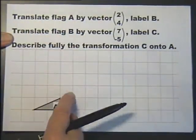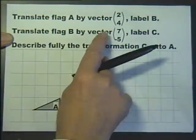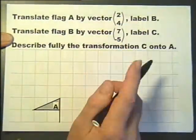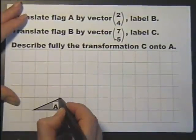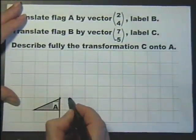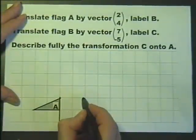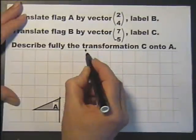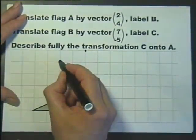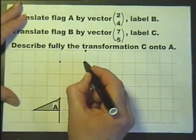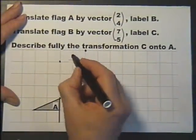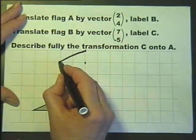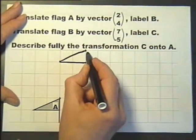Translate flag A by the vector (2, 4) and label it B. So we take this point and go along 2 and go up 4. And then we can see where the other points go to. So that's going to be flag B.